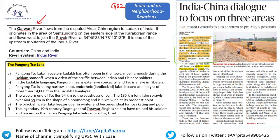What is the Galwan area? The Galwan River flows from the disputed Aksai Chin region to Ladakh. It originates in the area of Samskung on the eastern side of the Karakoram Range and flows west to join the Shyok River. It is one of the upstream tributaries of the Indus River, covering China and India.